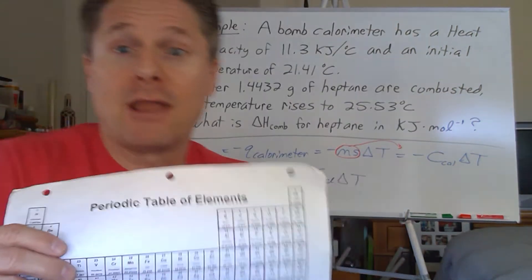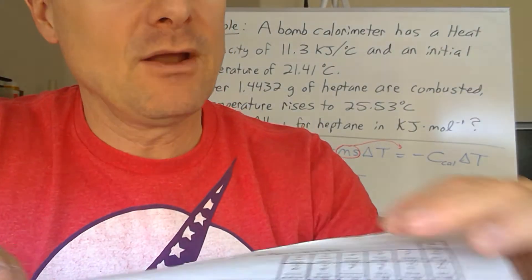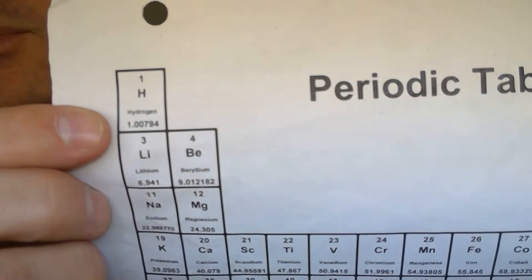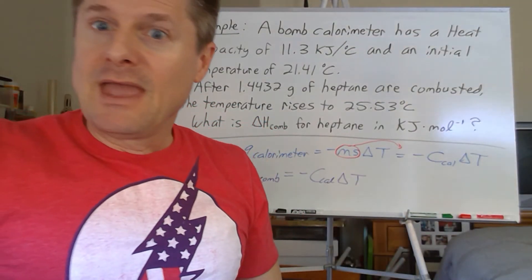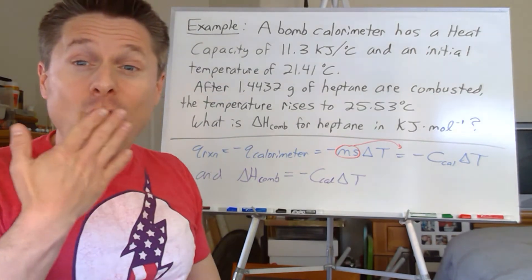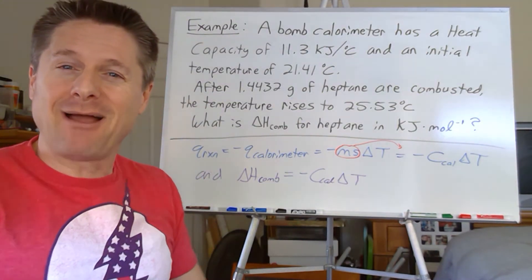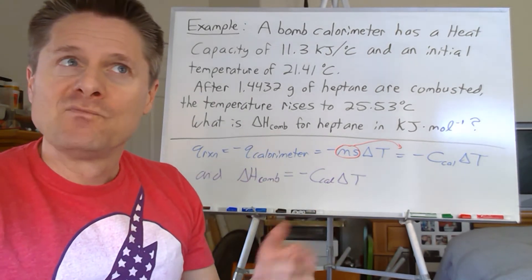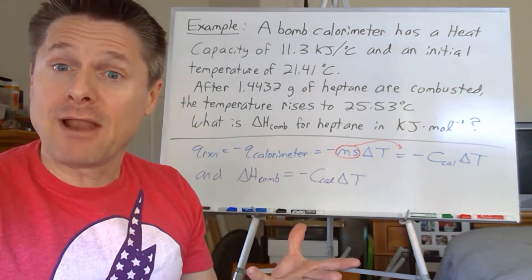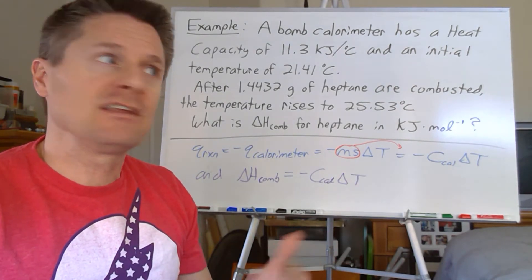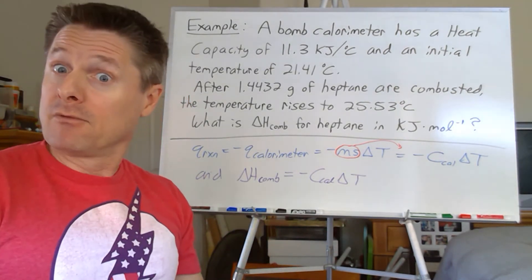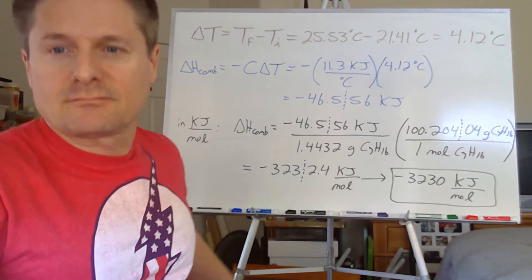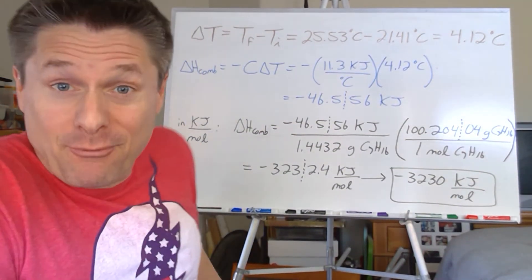We need the molar mass of heptane. Carbon is 12.011 and hydrogen is 1.00794. If you don't know the formula for heptane, remember for a hydrocarbon it's C_n H_(2n+2). Hept is seven, so seven times two is 14 plus two is 16: that's C7H16.